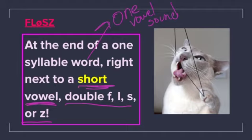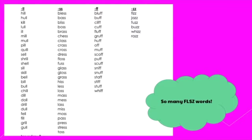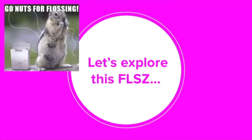It is a one syllable word right next to a short vowel — all of these are next to a short vowel — and you double F, L, S, or Z. There are so many floss words you guys know. There's a rhyme and reason as to why 'loss' has two S's, or 'sniff' has two F's, or 'puff' has two F's, or 'dress' has two S's — it's not a coincidence. There's a reason: the floss rule. Let's explore it.